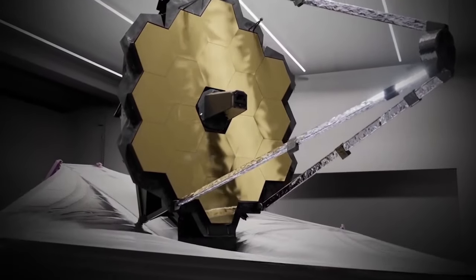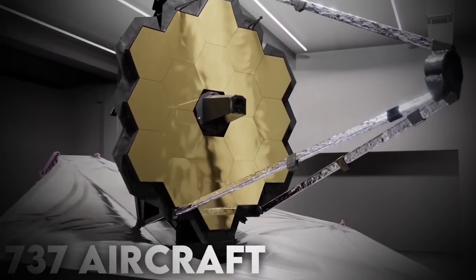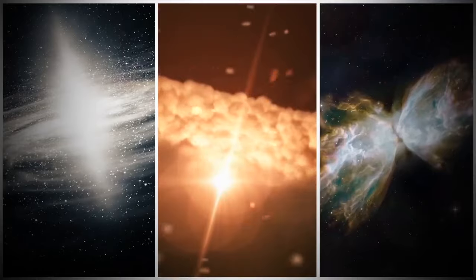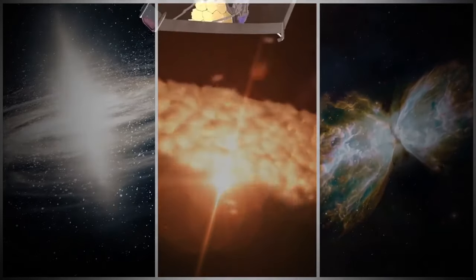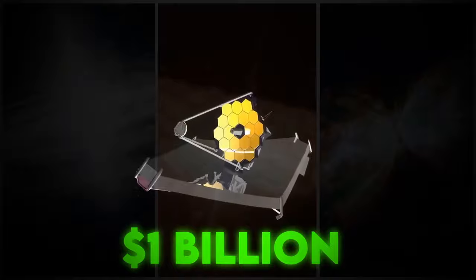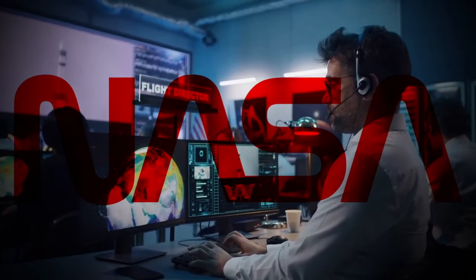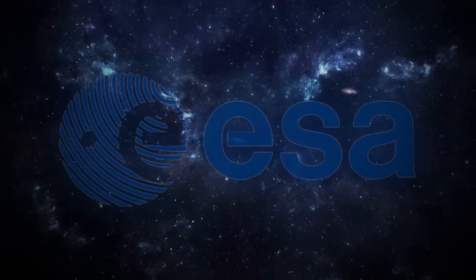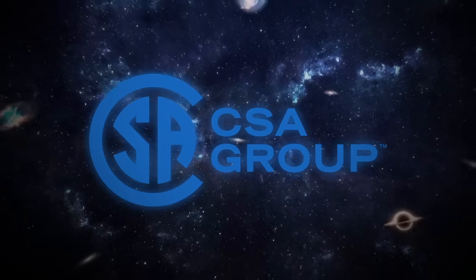The James Webb Space Telescope, a marvel as large as half a 737 aircraft, was humanity's first attempt to capture the universe's first lights. It was built with a budget of around 1 billion US dollars and the relentless effort of scientists from NASA, ESA, and CSA for over three decades.